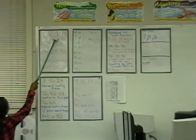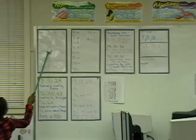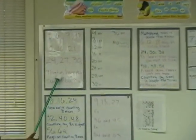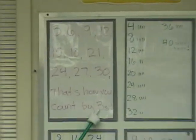3, 6, 9, 12, 15, 18, 21, 24, 27, 30. That's how we count by 3's.